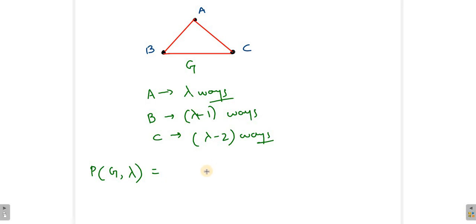So what will be the polynomial? The polynomial will be lambda times lambda minus 1 times lambda minus 2. That is simply the product of all the ways in which we have colored every single vertex.